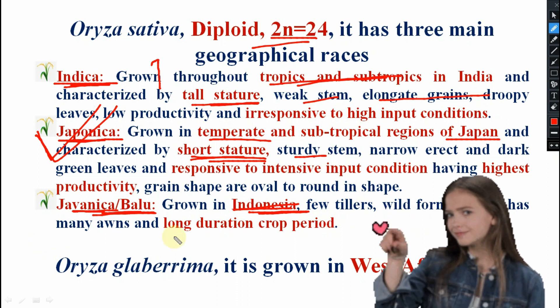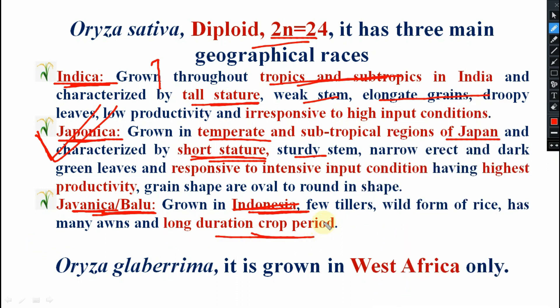Next is javanica or Balu rice, grown in Indonesia - very important. It has few tillers, many awns, and a long crop duration period. Which sativa variety has a tall structure? Indica. Short structure? Japonica. Which is having more productivity? Japonica. Which is grown in Indonesia? Javanica. Which has a longer crop duration? Javanica. Javanica is also known as Balu rice - any kind of question may come in the exam.